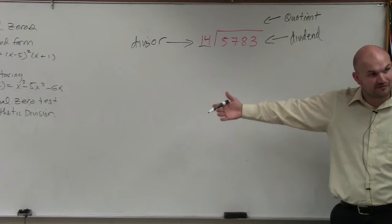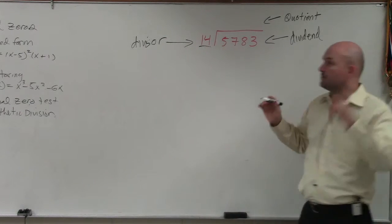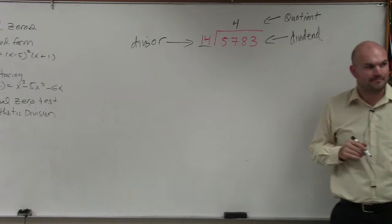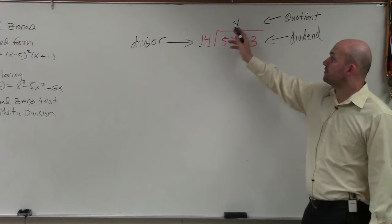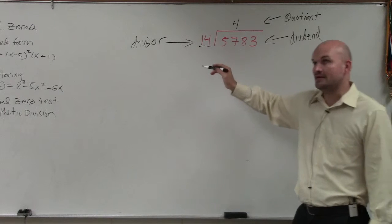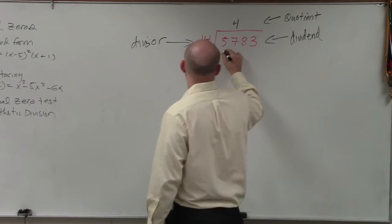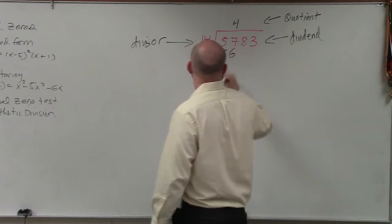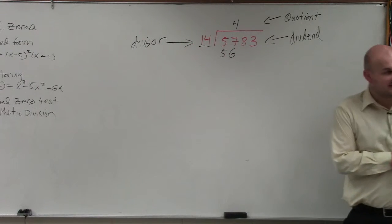14 does divide into 57. It goes in there four times. We write how many times it divides up there. Then I do 4 times 14, which would be 48... no, 56. Thank you. Correct.